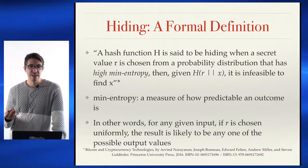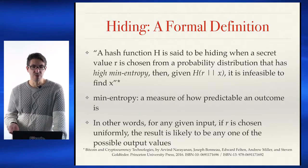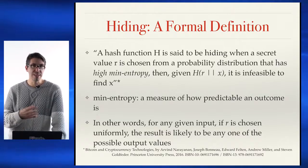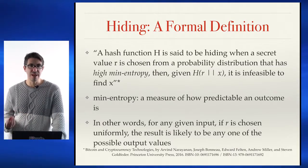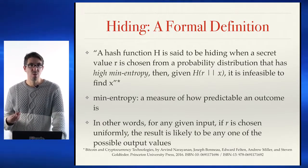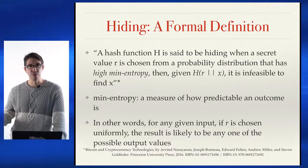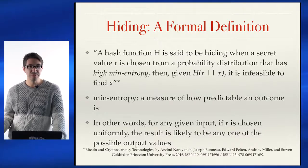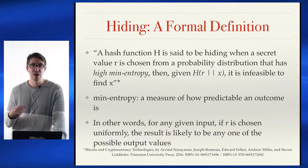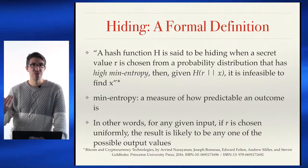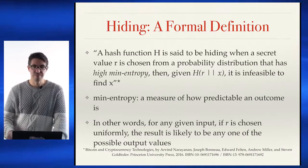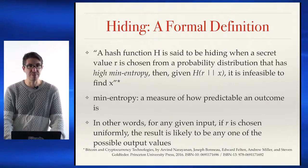What this means is if the value r is chosen uniformly, the result we get from the hash value is likely to be any one of the possible output values — adding some additional data onto this will not make it any easier to understand what the resulting value is. The easiest way to understand this: going from the result, you can't go back to the initial input — or at least it's computationally infeasible to do so.